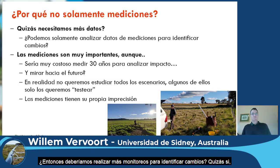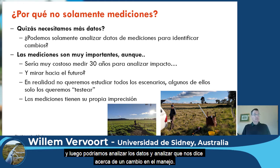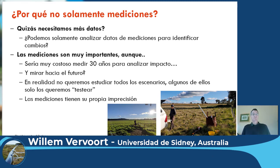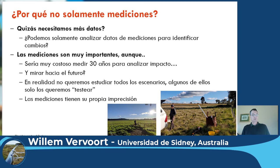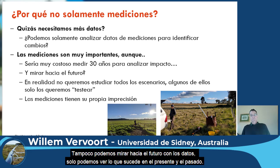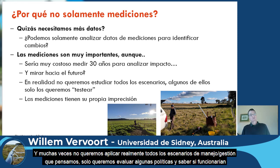So should we just be taking a lot more measurements? We could analyze the data to see whether it tells us something about change in terms of management — for example, there's an increase in forestry in Uruguay; can we analyze from the data how that affects streamflow? Yes, measurement is really important, but a lot of the processes we're talking about actually operate quite slowly, and you can't really wait 30 years to look at that impact — that would be far too expensive. We also can't look into the future from data; we can only look at what's happening now or in the past.